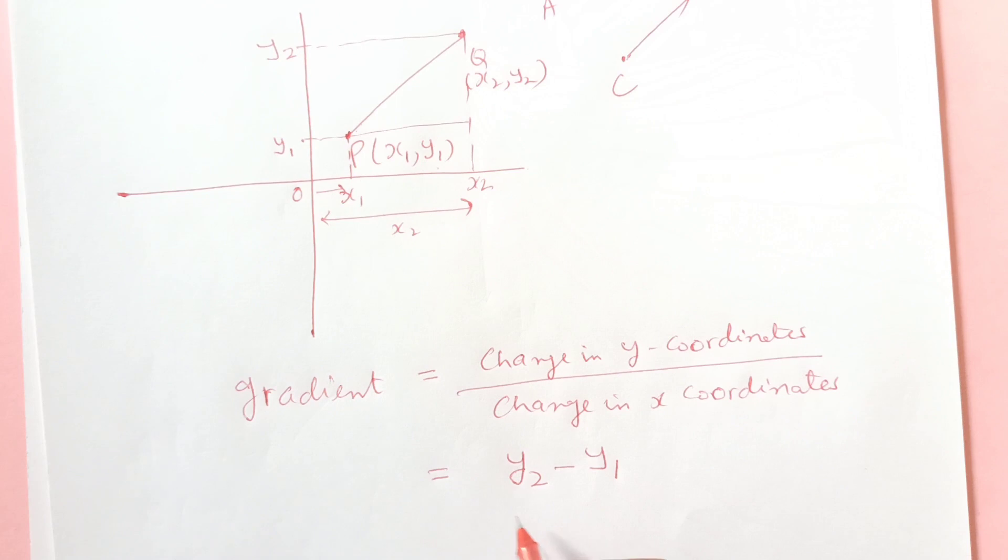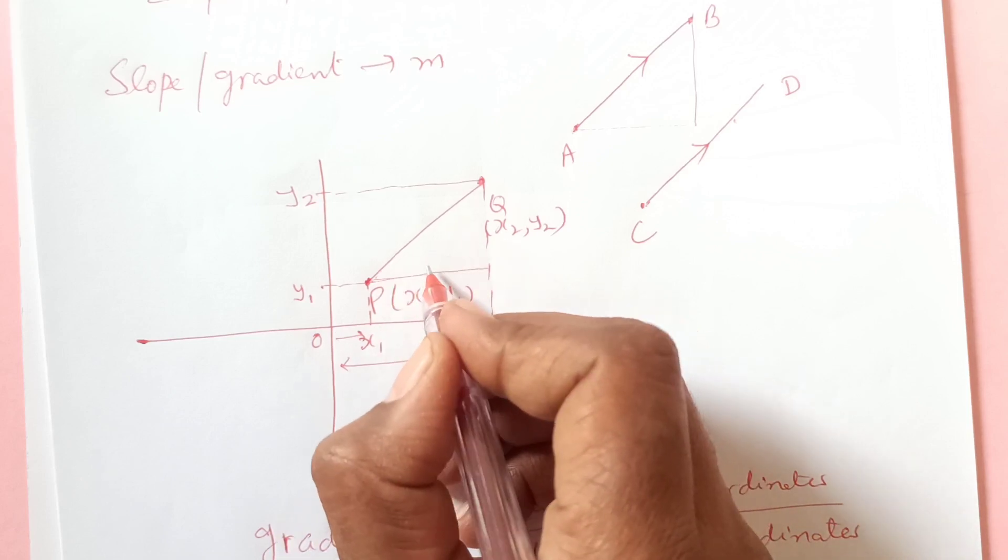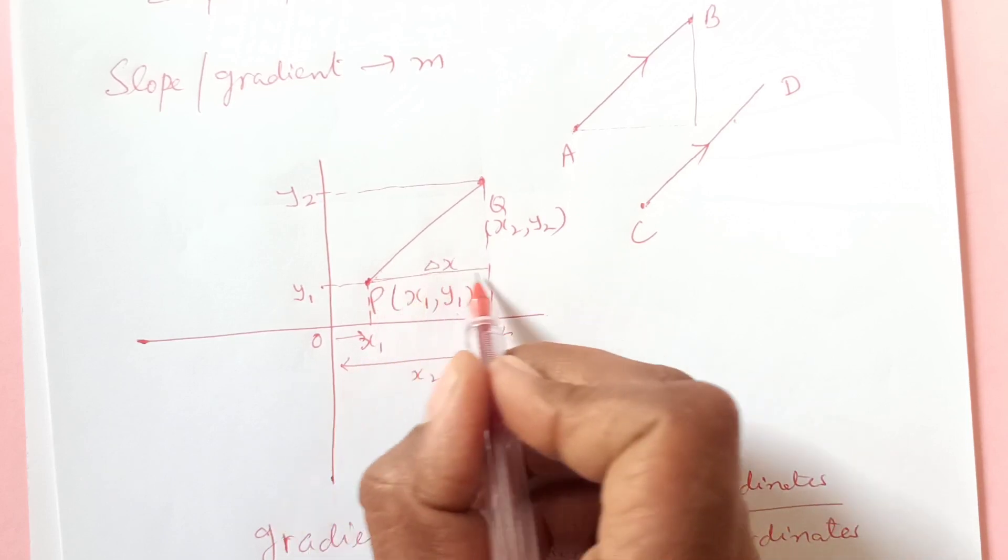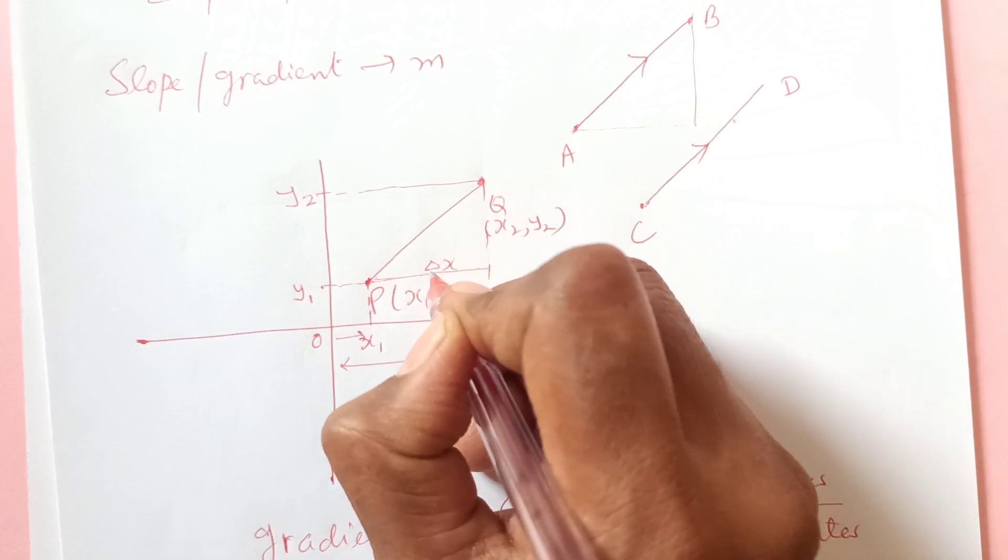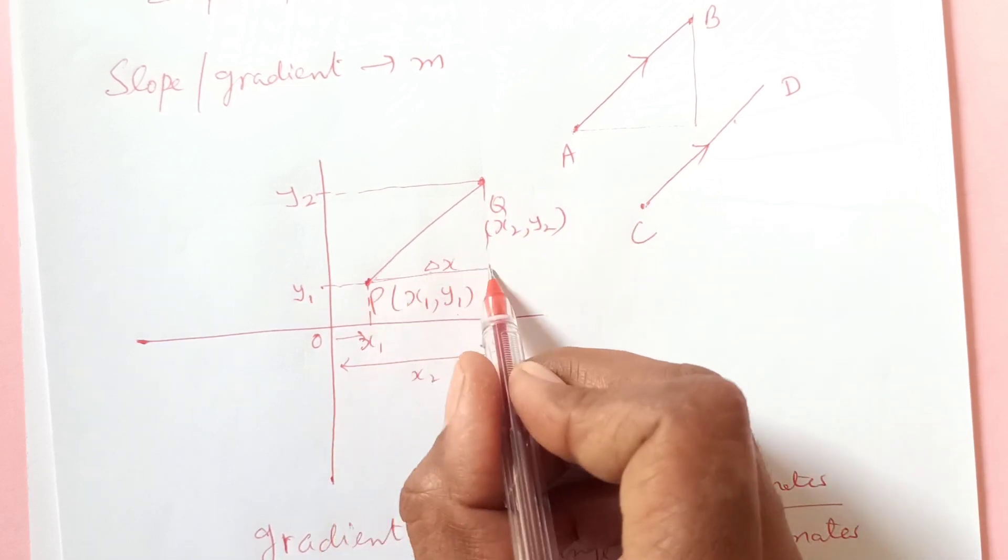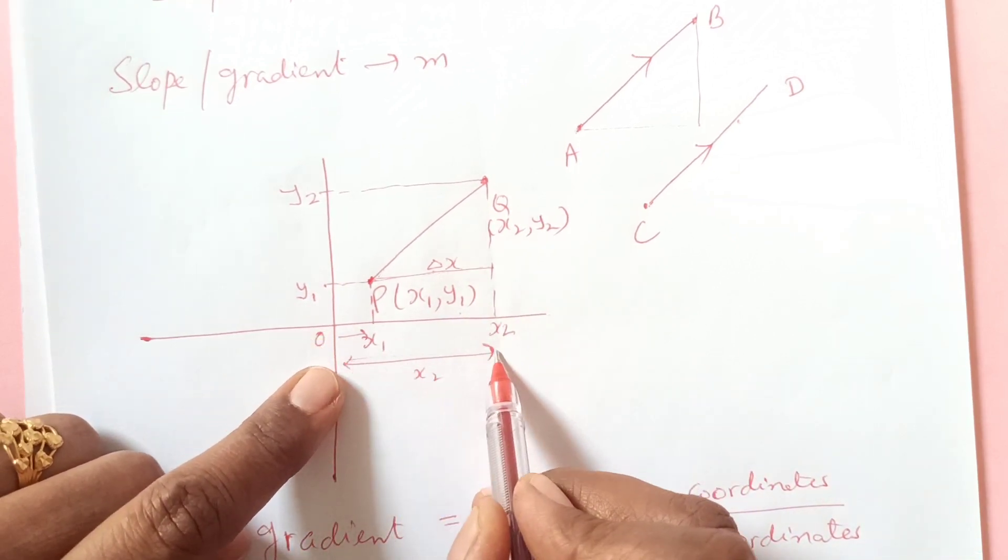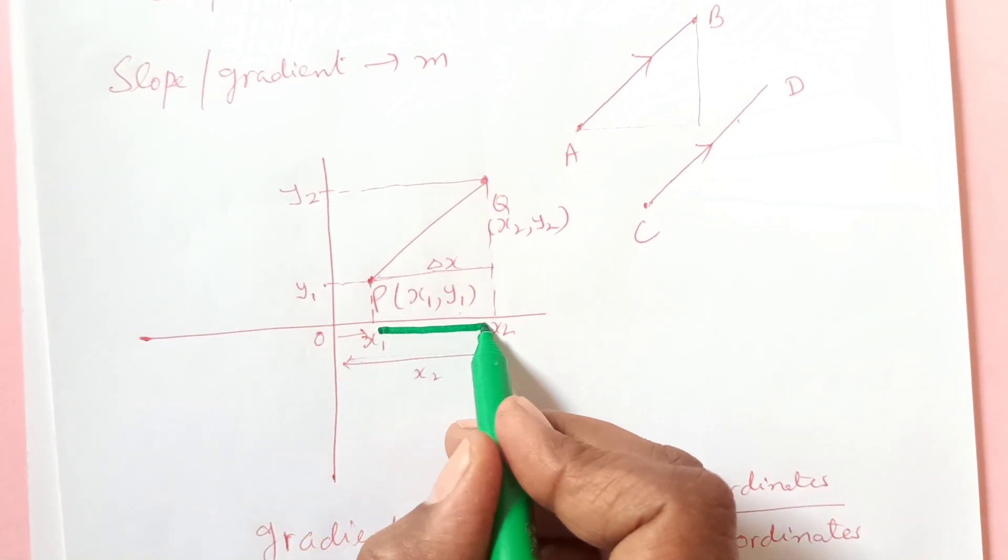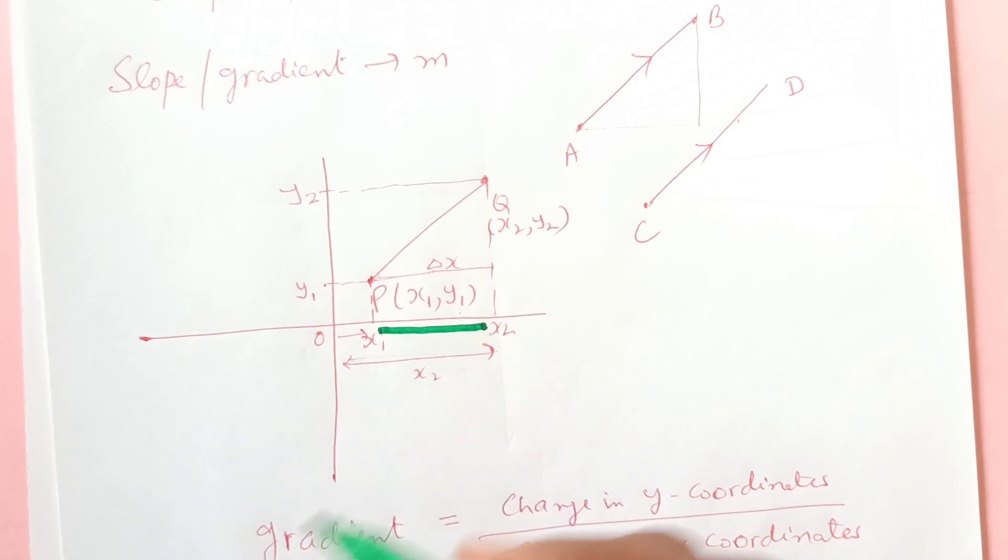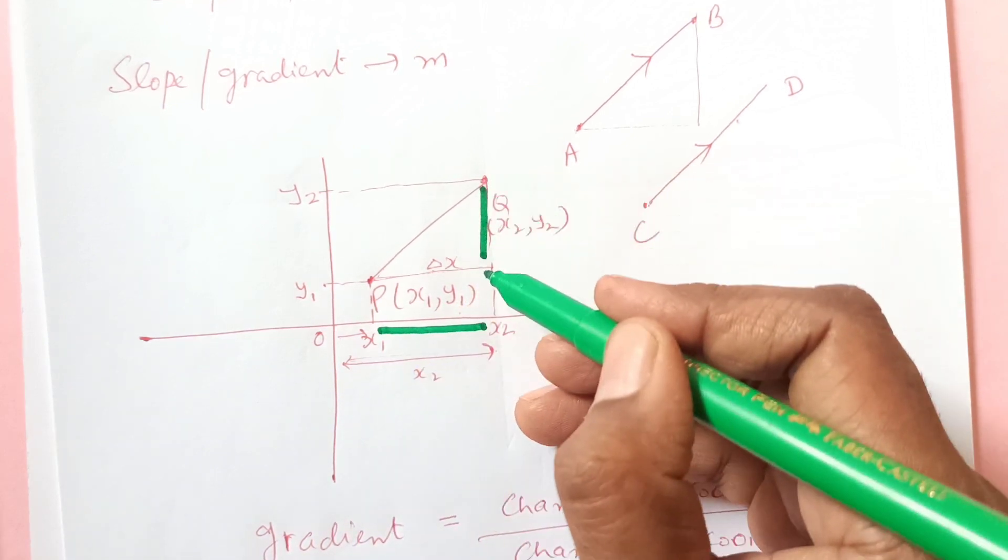So meaning we are looking for this, which we denote as delta x. Delta means change in x coordinate. We have this total x2 and we are looking for what is this from here: x2 minus x1. And for y coordinate we are looking for this one, that is y2 minus y1.